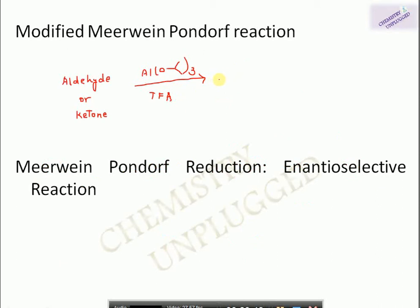In the modified Meerwein-Ponndorf-Verley reaction, instead of aluminium isopropoxide and regular solvents, we use trifluoroacetic acid (TFA). The product is the same — formation of an alcohol — but TFA enhances the rate of reaction. In an exam if you see TFA present, don't be confused: simply convert the aldehyde or ketone into an alcohol.